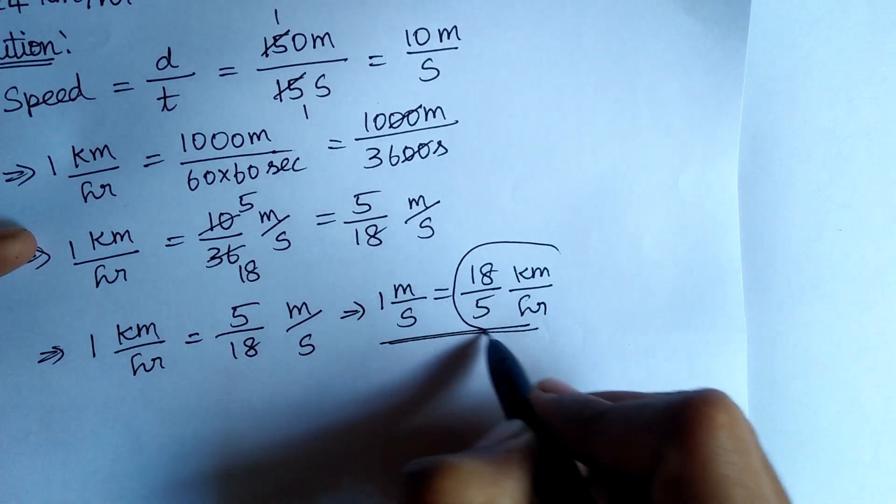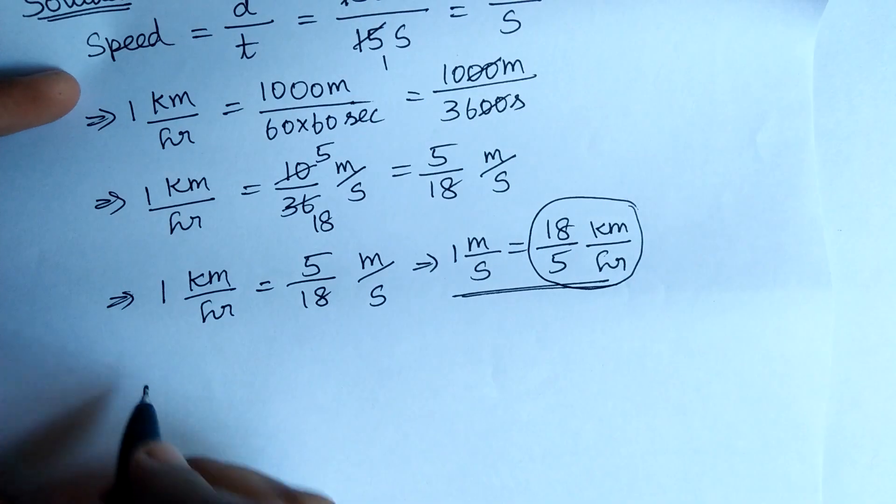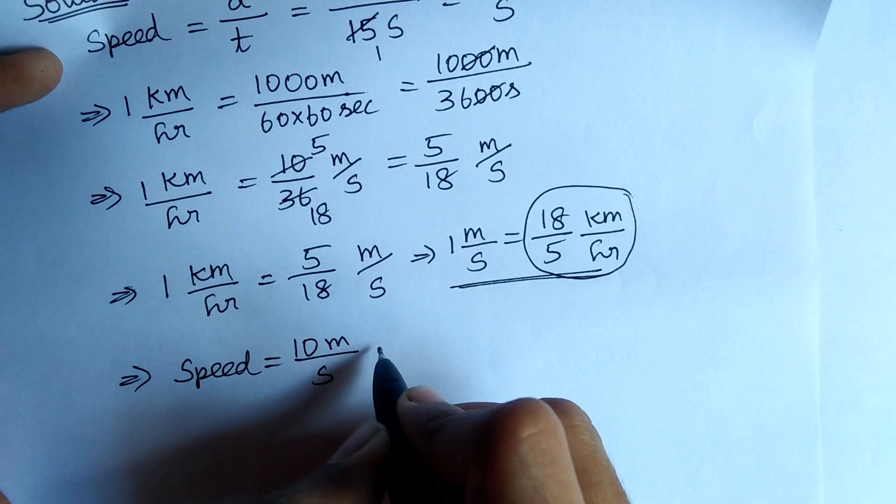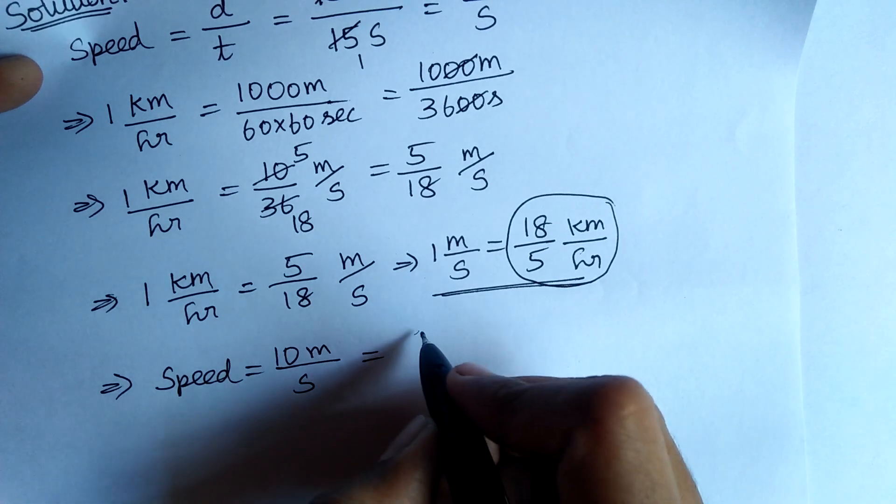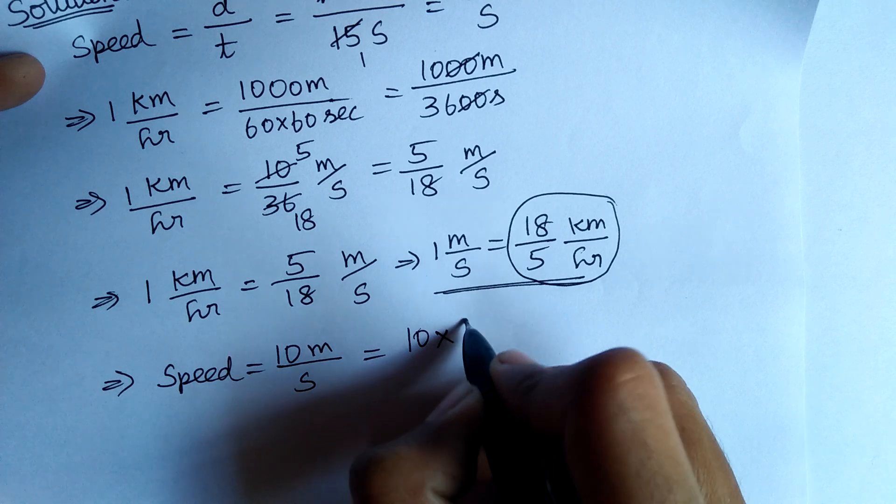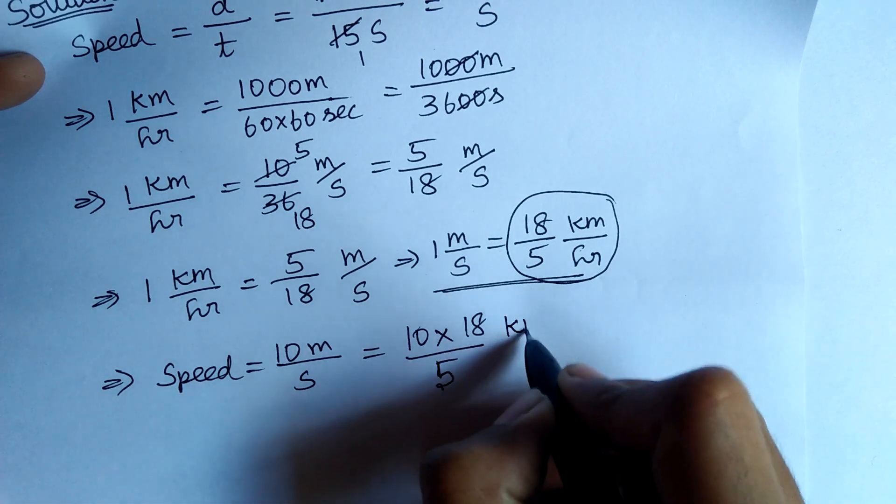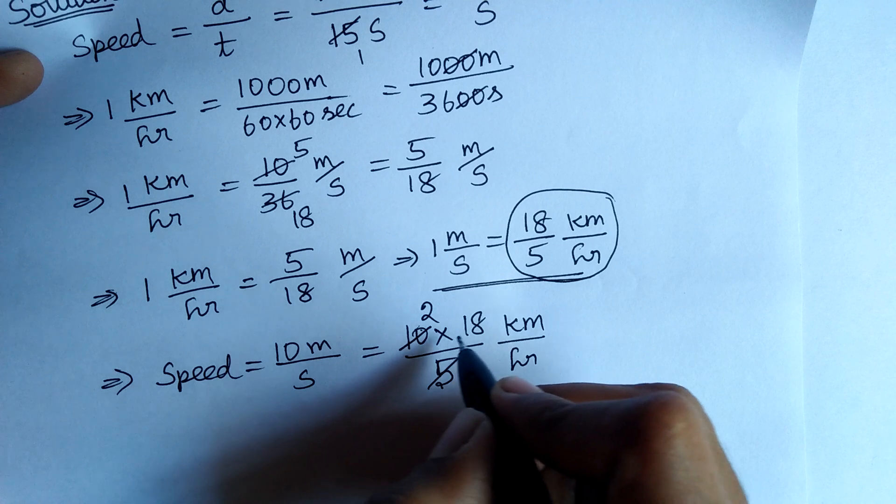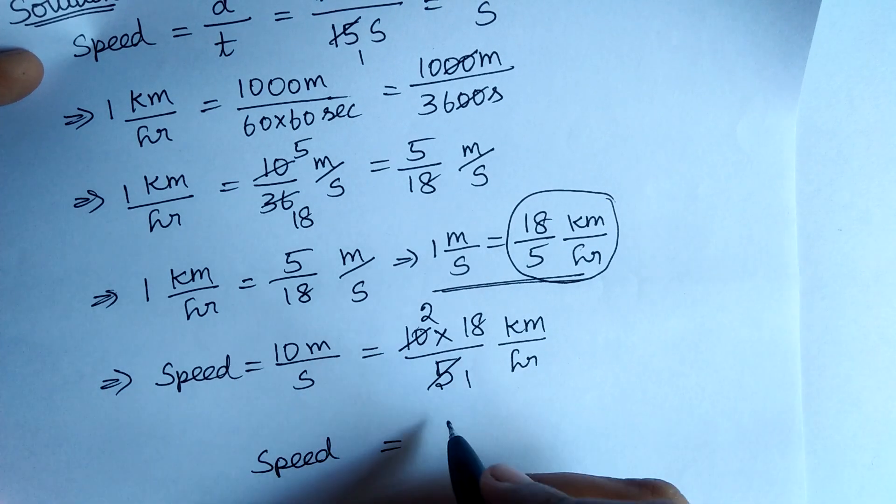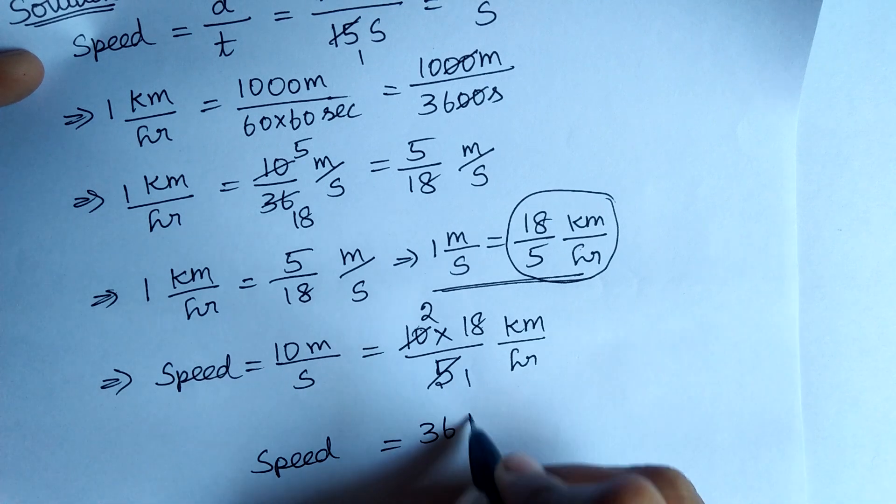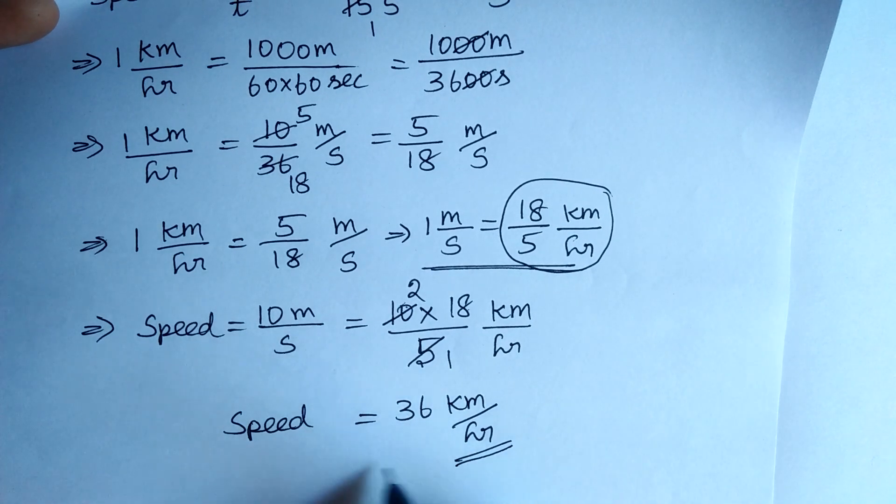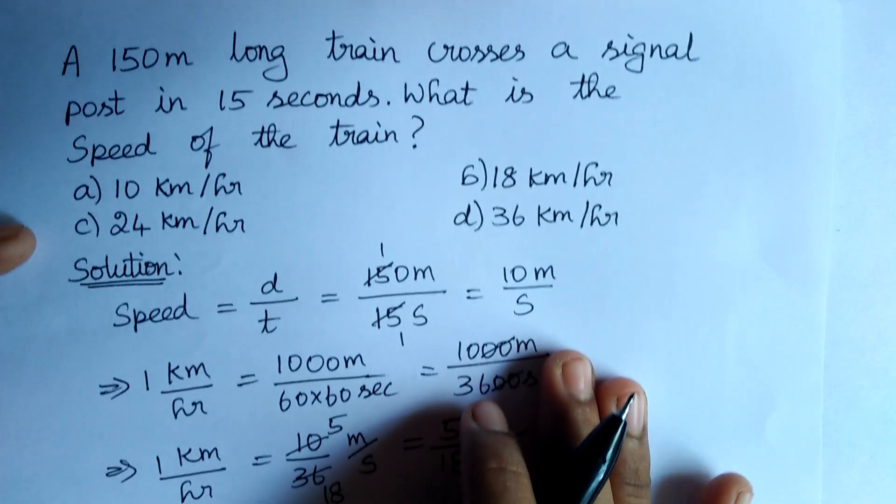Now, let us substitute this value in the answer we got. That is speed is equal to 10 meter per second. To convert this, 10 into 18 by 5 kilometer per hour. Therefore, speed is equal to 2 times 18, that's 36 kilometer per hour. The required answer, that is the speed in kilometers, is 36 kilometer per hour. The correct option is option D.